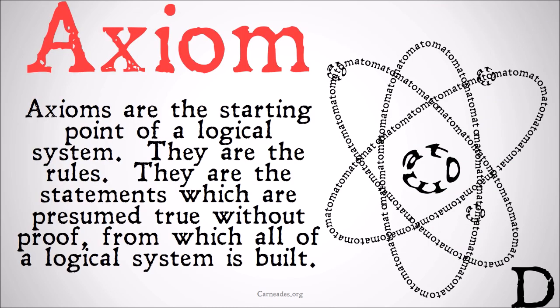Axioms are the starting point of a logical system. They are simply the rules — the statements which are presumed true without proof, from which all of a logical system is built. You have to start somewhere in a logical system. You start with your axioms, assume them true without proof, and then use them to prove everything else in your system.